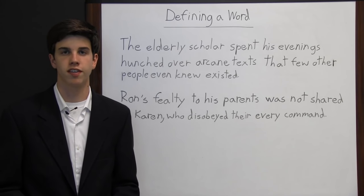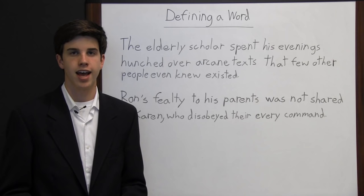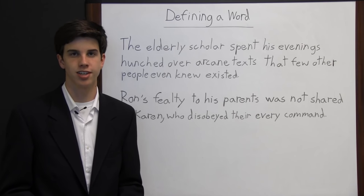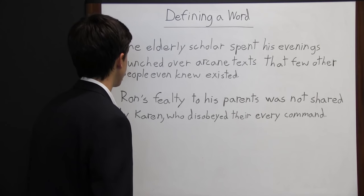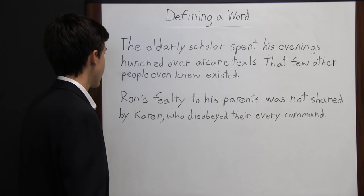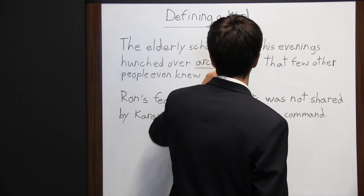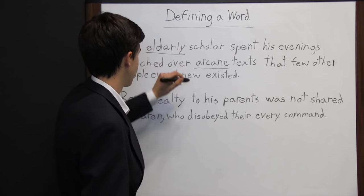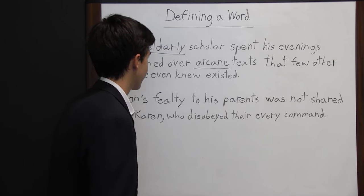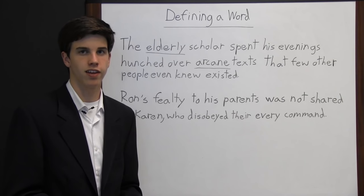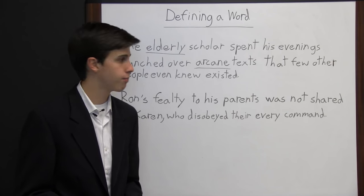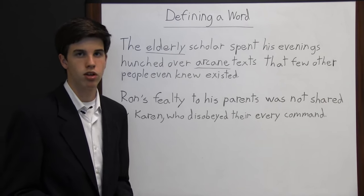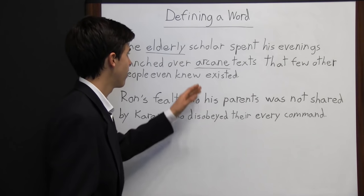Many times readers come across words they are unfamiliar with, so it's important to understand how to determine the definition of a word based on its context — looking at the words around it and how the word is used in the sentence. For example: 'The elderly scholar spent his evenings hunched over arcane text that few other people even knew existed.' Since only an elderly scholar would be studying these texts, it must be a complex subject requiring much knowledge and wisdom — and since few people even knew it existed, it must be rare. We've quickly determined that 'arcane' means rare or obscure.